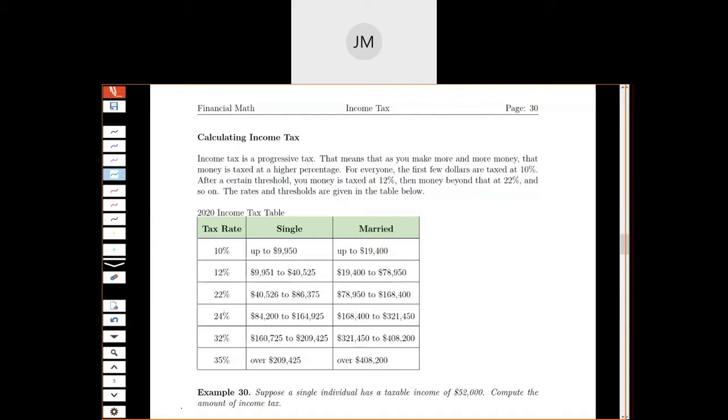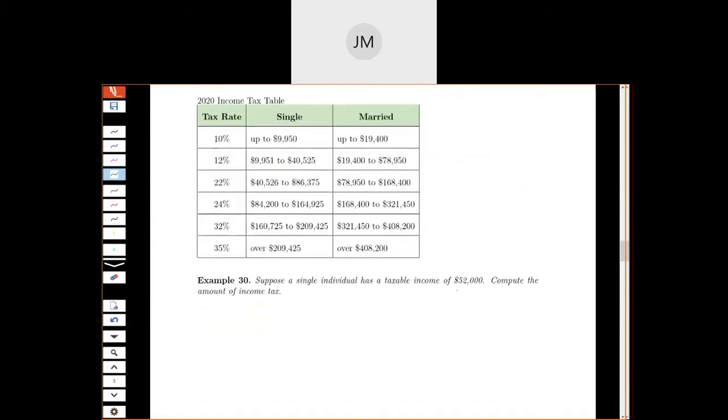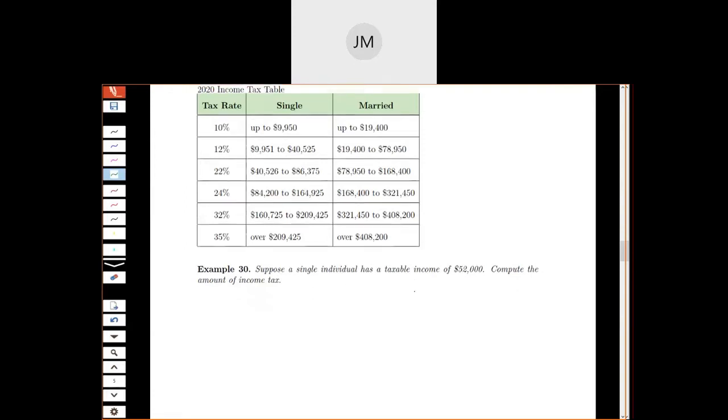So let me show you, I think it's probably best to look at this as an example. So let's suppose that we have a single individual with a taxable income of $52,000. So we're skipping all the adjustments and deductions and stuff and just saying, let's look at this taxable income of $52,000, compute the amount of income tax.